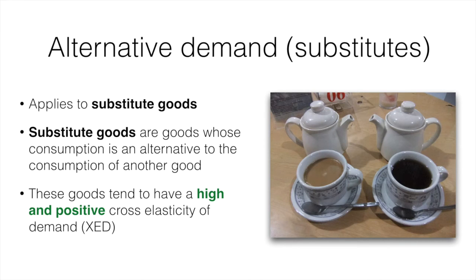Should the price of tea rise, ceteris paribus, then we would anticipate an increase in the demand for coffee, as it will be seen as the relatively more affordable choice. On the other side, if the price of tea were to fall, ceteris paribus, we would anticipate a decrease in the demand for coffee, as it would now be perceived as the relatively more expensive option.